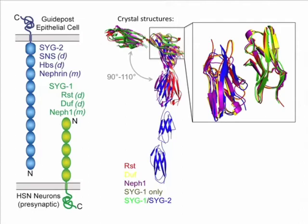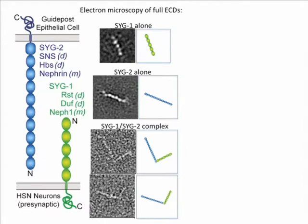Intriguingly, we found that the interface between all of these complexes was mediated by the same residues, so one protein interface mediated both homophilic and heterophilic interactions. We were curious about the disposition of the other IG domains in the full extracellular domains, and for this we turned to electron microscopy and collaborated with Tom Walsh's lab. Using single particle imaging, they found that SIG1 and SIG2 adopted extended conformations, and we were able to see the SIG1-SIG2 complex formed an L-shaped structure, which recapitulated the orthogonal docking geometry that we saw by crystallography.